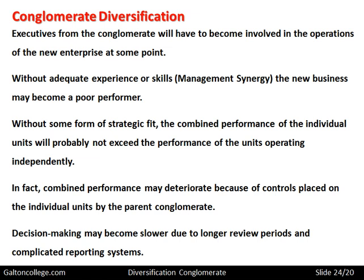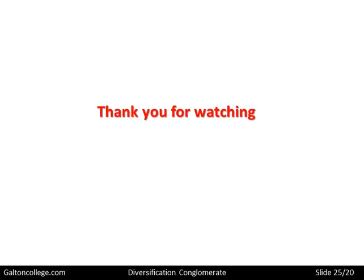So we have two concepts: conglomerate diversification and concentric diversification. Concentric is looking for synergy — similarity in the business units in that configuration. Conglomerate is not looking for similarity; it's looking for profitability. But there are issues involved. So we have two ideas and they are different. That completes this class — thank you for watching.